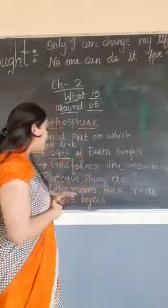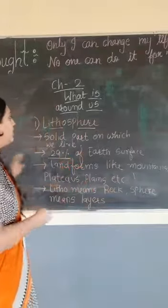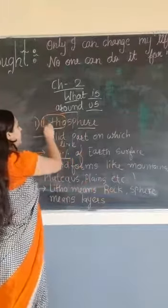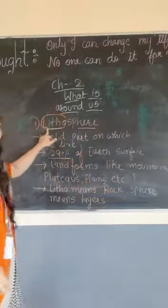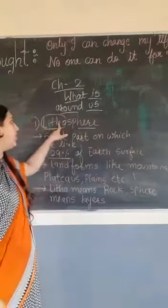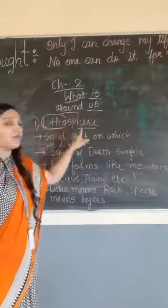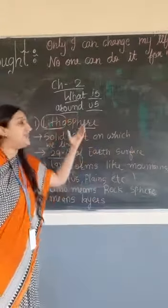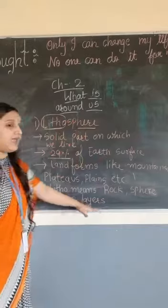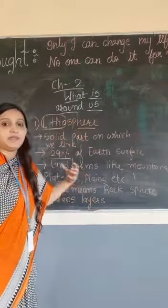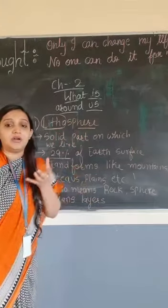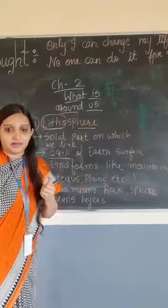The word 'litho' means rock, and 'sphere' means layers — the different, different layers of the earth.